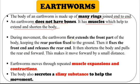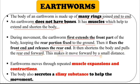During movement, the earthworm first extends the front part of the body while keeping the rear position fixed. Then it fixes the front position and releases the rear. The body then shortens and pulls the rear end forward, making the earthworm move forward by a small distance. The earthworm moves through repeated muscle expansions and contractions, and also secretes a slimy substance to help movement.